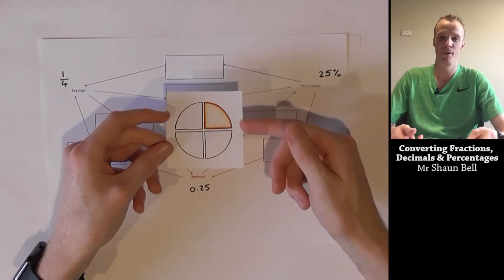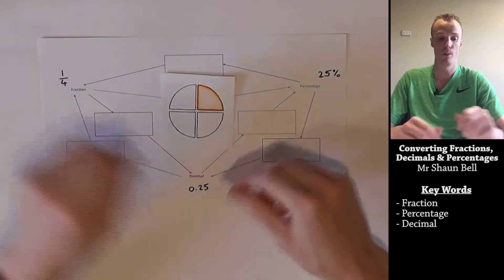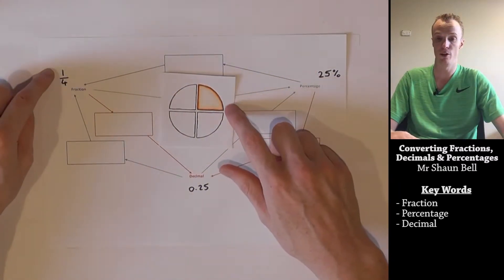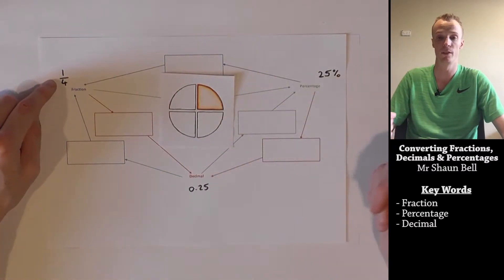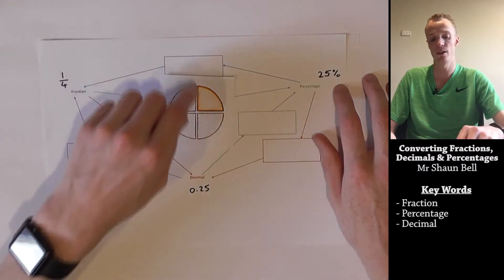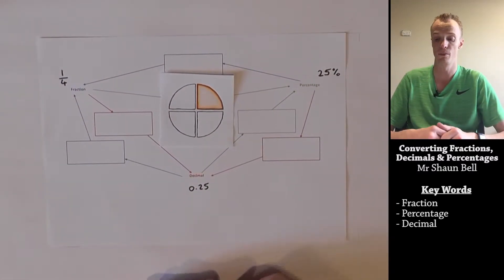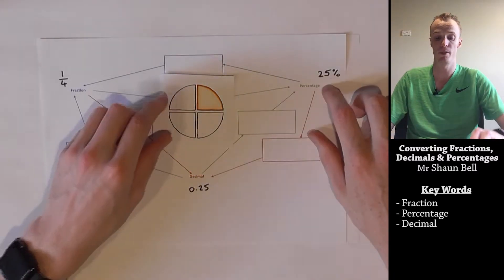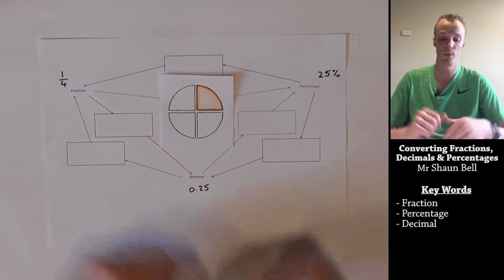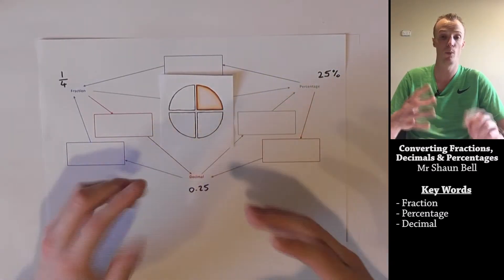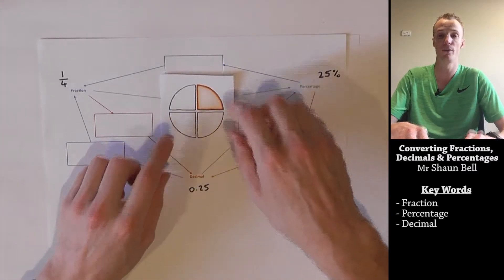Let's begin by considering the following circle. We can represent the shaded part of this circle as a fraction, where we've got one equal portion of the circle shaded out of the four equal portions of the circle there is total. As a percentage, we consider the entire circle to be 100% of the circle, and the 25% represents the shaded portion. As a decimal, we consider the entire circle to be one whole portion, and we've got 0.25 of the portion shaded.